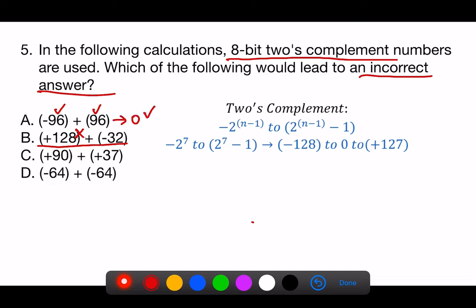C, plus 90 plus plus 37. Both numbers can be represented, and their sum is plus 127, which is the maximum positive number representable in 8-bit 2's complement.